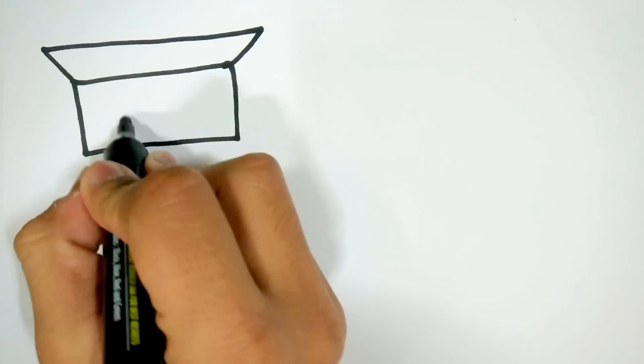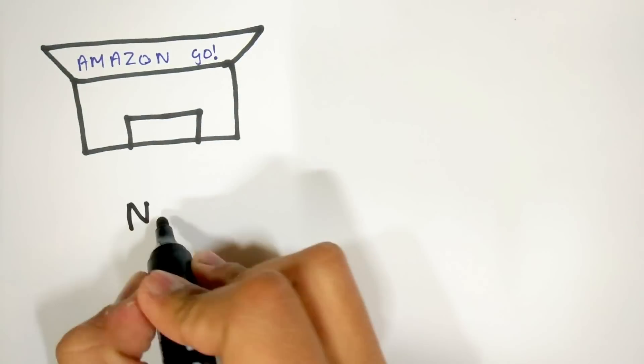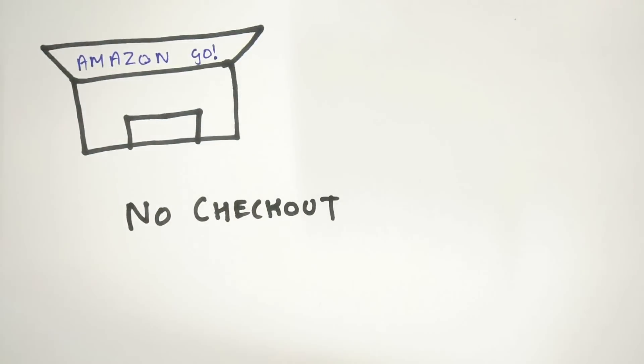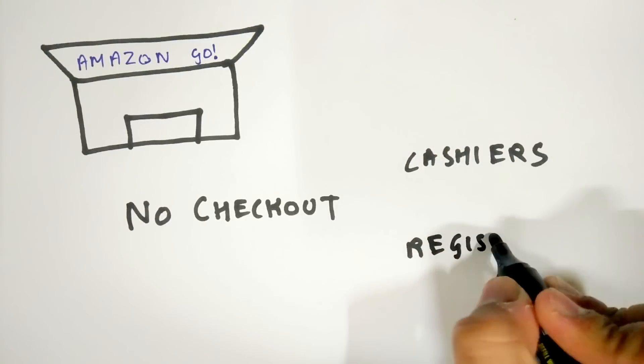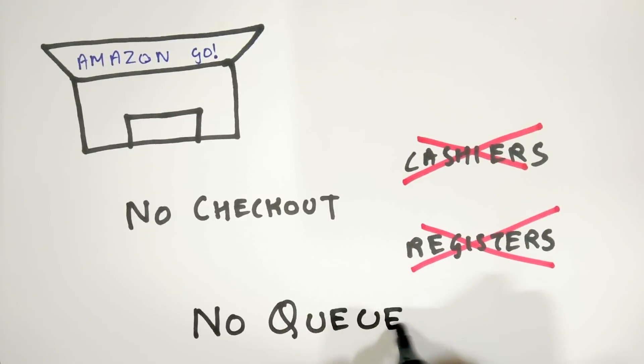By now, you must have watched Amazon's video where they introduce you to their new futuristic retail store called Amazon Go. Amazon Go is a kind of store where no checkout is required. Therefore, it does not have cashiers or registers and more importantly, no queues. You just pick and go.